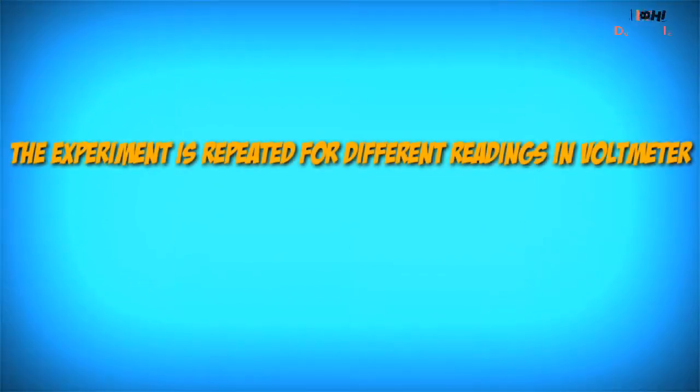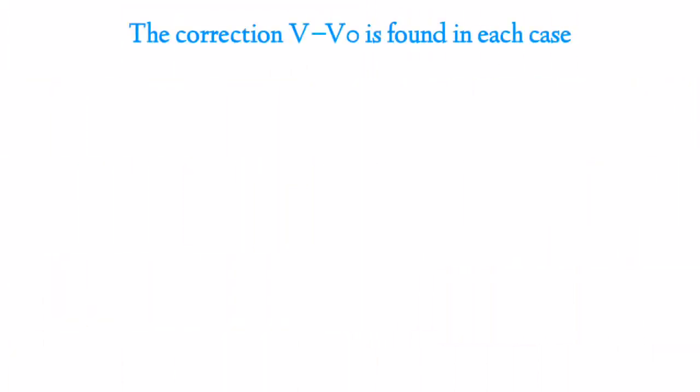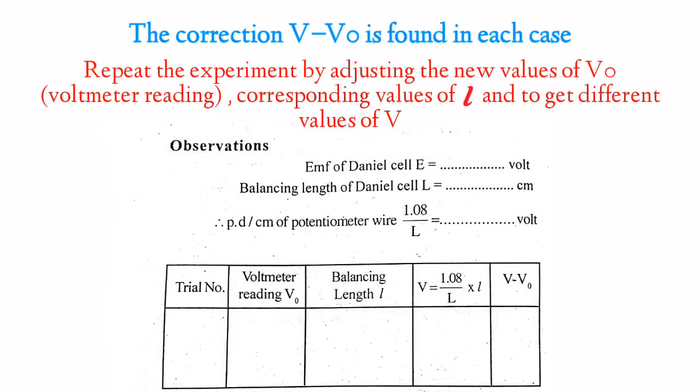The experiment is repeated for different readings in the voltmeter. The correct value of potential is found out. The correction V minus V zero is found in each case.